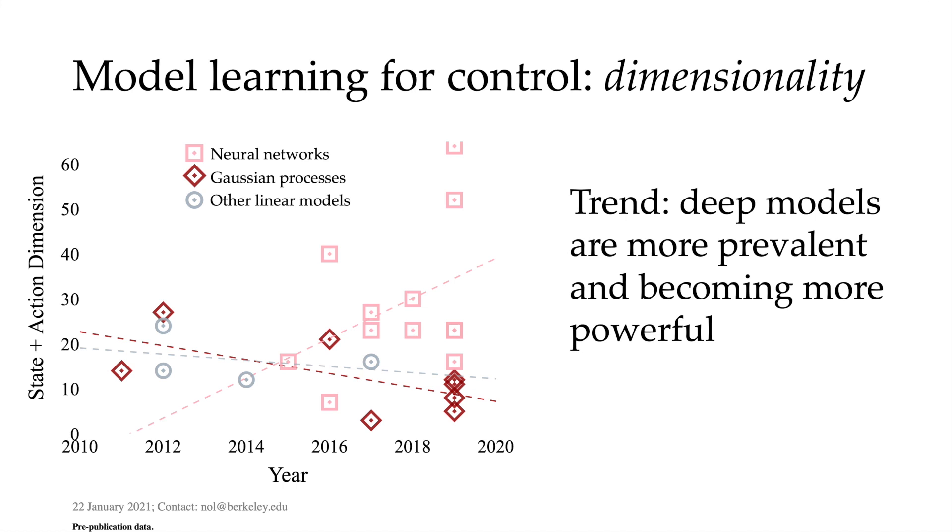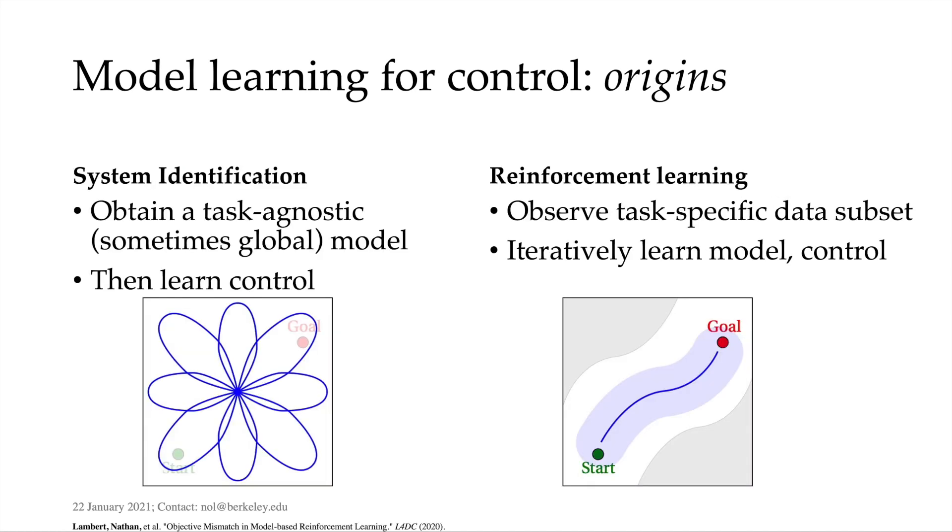Deep models have compounding errors and are a black box for interpretability. Model learning for control has its origins in system identification where an explicit set of data would be gathered to collect a global model. Now, with RL, the model learns an uneven covering of a portion of the task space.